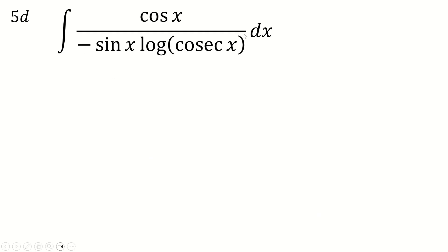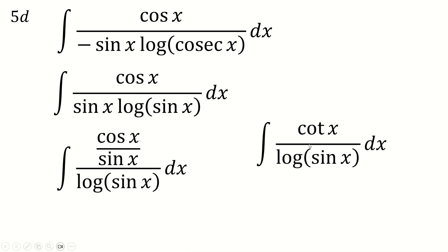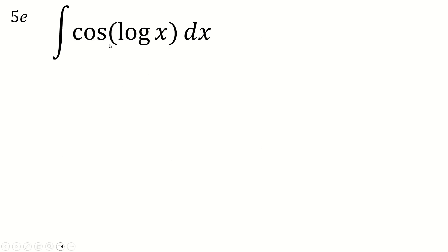Another one where you move the minus to the exponent and note that cos x over sine x is cot. If you know that the integral of cot is log sine, then log sine differentiates to cot. So the answer is log of log of sine x — just a matter of rearranging the expression to make that visible.